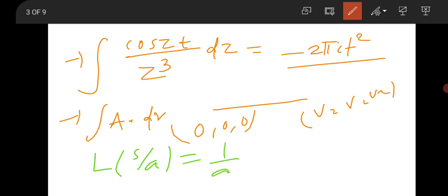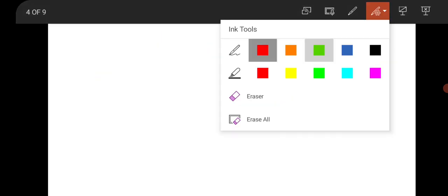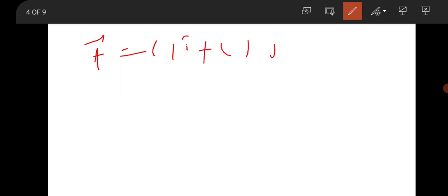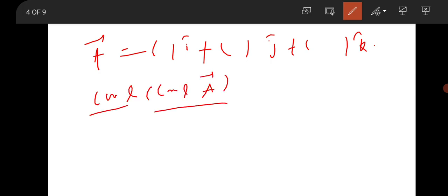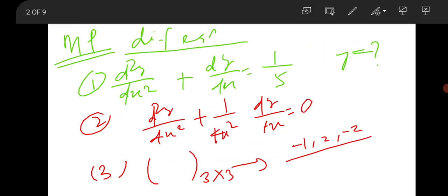There was a Laplace transformation question — Laplace transform of t/a, and the answer will be (1/a)F(s/a). Then a vector question where a vector was given as some i-cap + j-cap + k-cap components, and you had to find curl of curl A. This is straightforward. These questions are quite easy from a mathematical point of view.